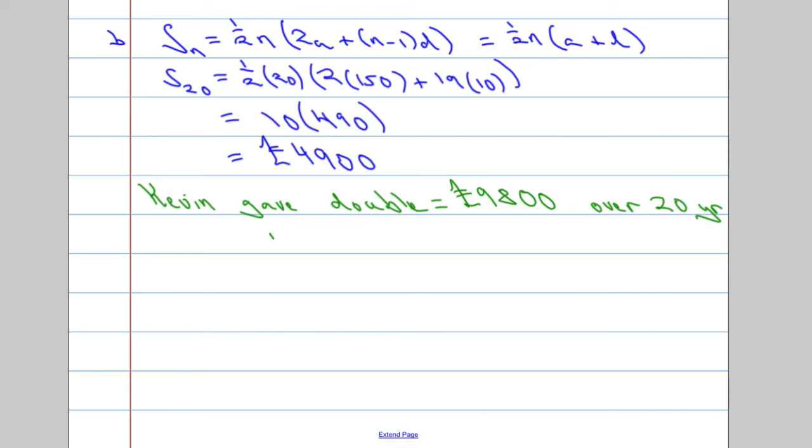We're going to use the fact that a half... Let me just switch colours actually to black here. So, when Kevin added up all his money for 20 years, the sum of the 20 years is going to be equal to a half times N, which is 20, times 2A.